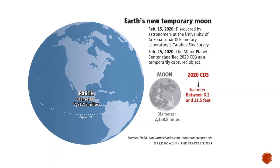Astronomers have observed a small object orbiting Earth, dubbed a 'mini moon' or Earth's second moon. Discovered by NASA astronomers, it is actually an asteroid about the size of a car, with a diameter of about 1.9 to 3.5 meters. Unlike our permanent moon, the mini moon is temporary — it will eventually break free of Earth's orbit. The asteroid originated from the asteroid belt between Mars and Jupiter. Asteroids that cross Earth's orbit are called near-Earth asteroids.